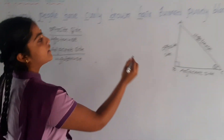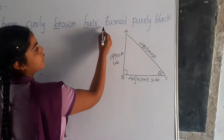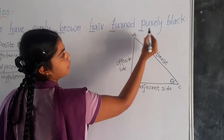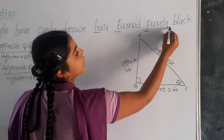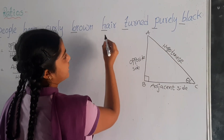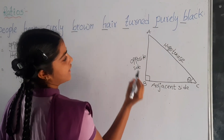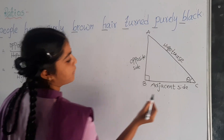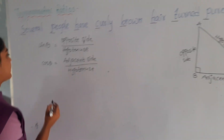And here T stands for tan theta, P stands for perpendicular, and B stands for base. That means tan theta is equal to opposite side by adjacent side.